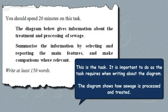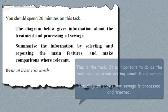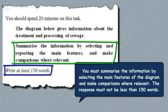This is the task. It is important to do as the task requires when writing about the diagram. The diagram shows how sewage is processed and treated. You must summarise the information by selecting the main features of the diagram and make comparisons where relevant. The response must not be less than 150 words.